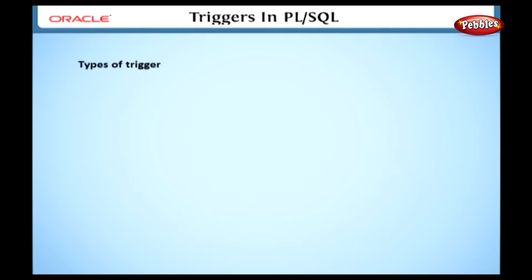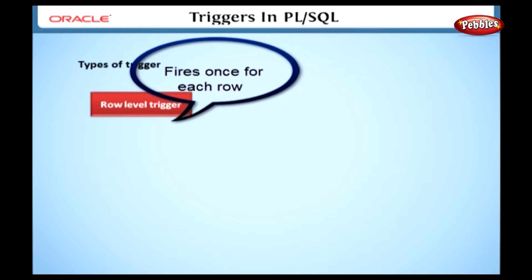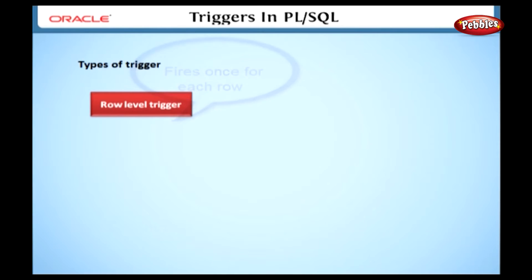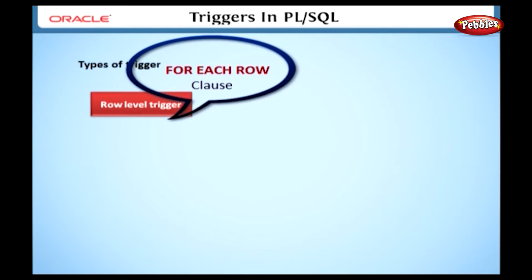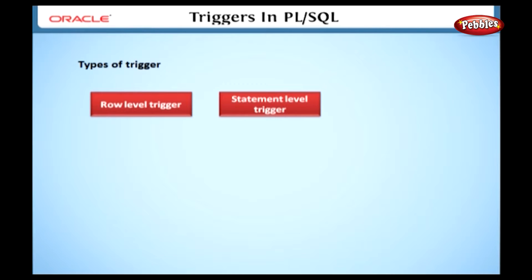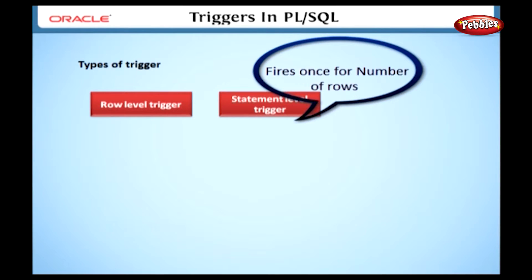Let's see the different types of triggers. A row level trigger fires once for each row affected by the DML operation. To specify a row level trigger, you have to use a FOR EACH ROW clause in the trigger definition. A statement level trigger fires once irrespective of the number of rows affected in the table.